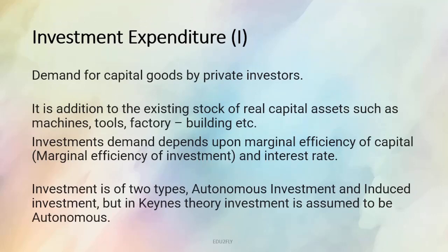Investment expenditure is denoted by I. It is addition to the existing stock of real capital assets such as machines, tools, factory building. Existing machines and tools, factory building mein agar investment kar rahi ho aur add kar rahi ho machinery aur tools, usme investment agar kar rahi ho — that is investment expenditure. Investment demand depends upon the marginal efficiency of capital and the interest rate. Investment bhi do tarike ki hoti hai — it is autonomous or induced investment. Lekin Lord Keynes ke according, hum investment ko autonomous hi lete hai.